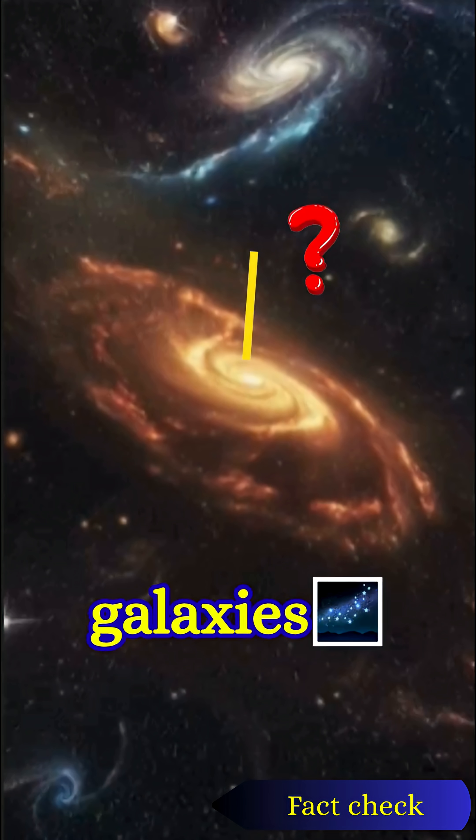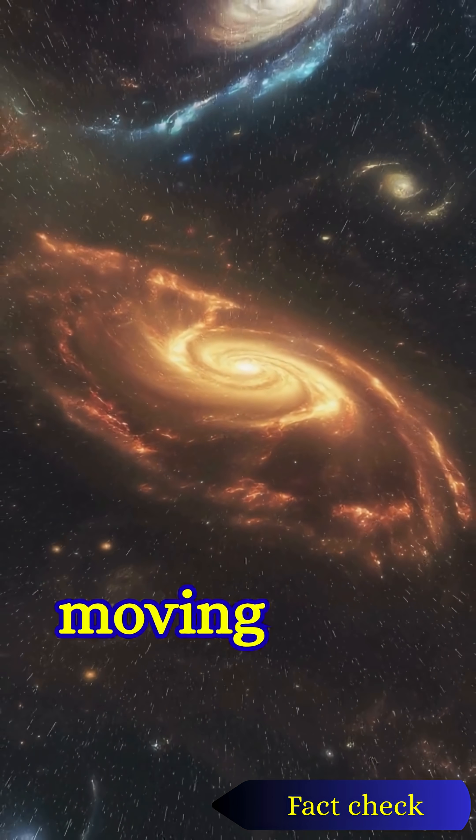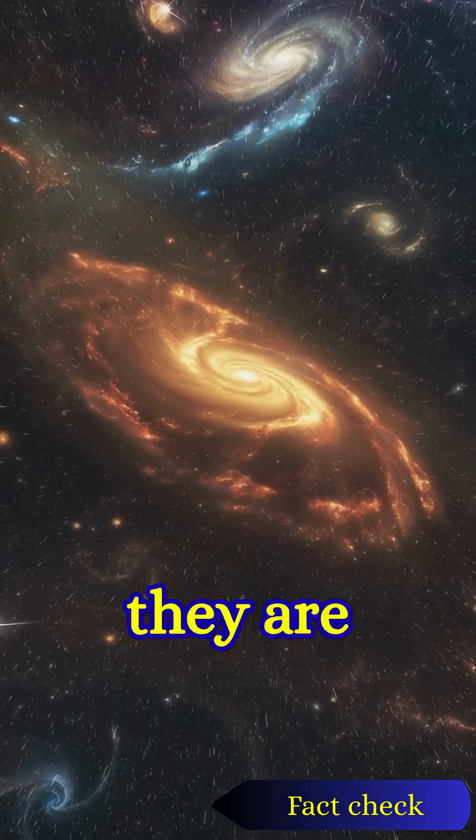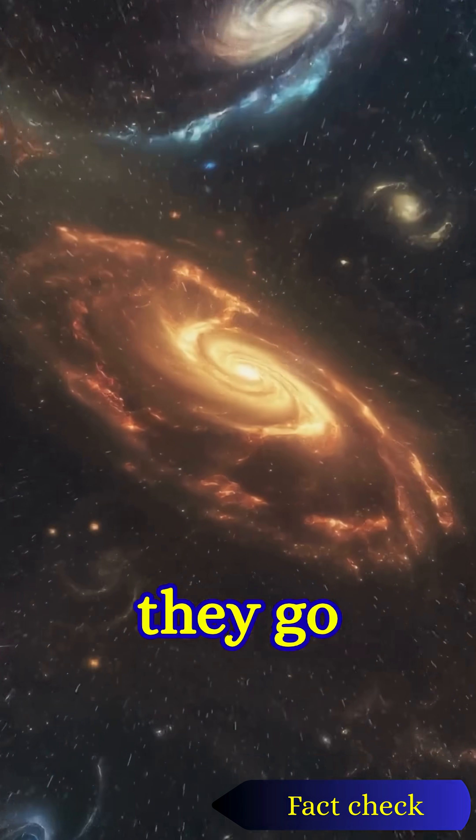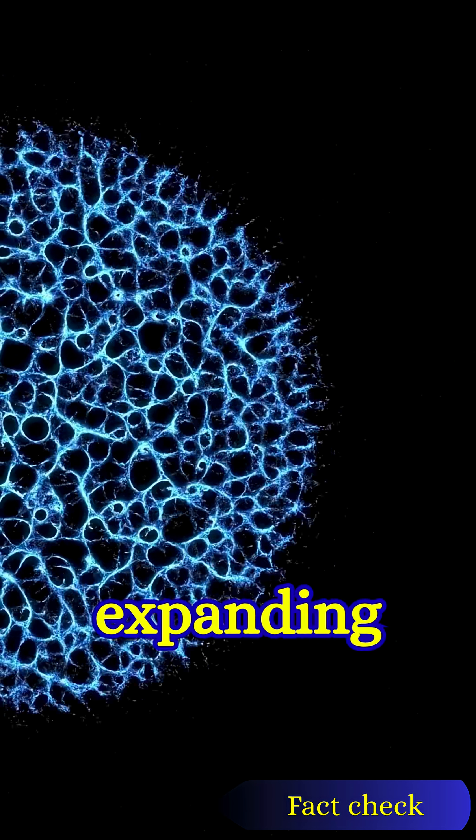Then in 1929, astronomer Edwin Hubble measured the speed and distance of galaxies. He discovered that all galaxies are moving away from us. The farther they are, the faster they go. This confirmed the universe is expanding.